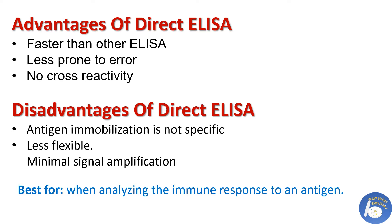Disadvantages: all types of protein including the target protein are immobilized on the well plate, so detection does not become specific. This is a less flexible type of ELISA because for each target protein a specific conjugated primary antibody has to be designed. This ELISA gives minimal signal amplification because no secondary antibody is used. Direct ELISA is best for analyzing the immune response to an antigen.